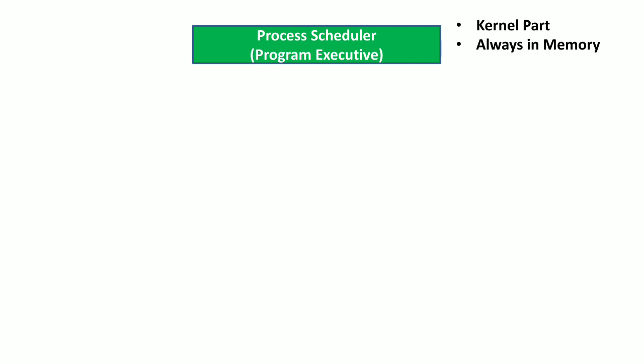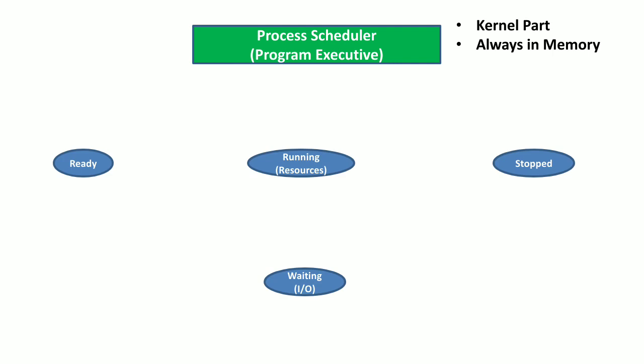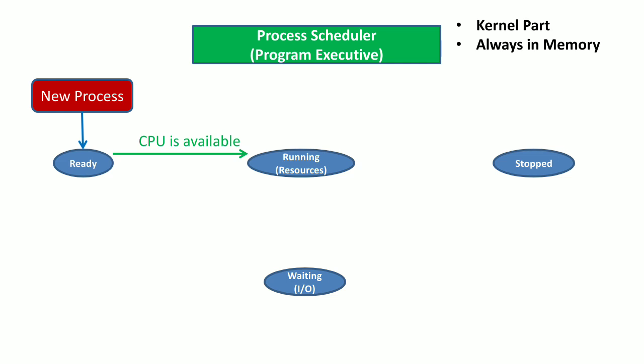In this video I will discuss various different states of a process while it is being executed by the operating system. This is a process scheduler or a program executive, which is basically a special part of a kernel and it always resides inside the computer memory to supervise the execution of other processes. There are four states in which a process may reside: ready, running, stopped, and waiting. Once a new process is created it is in the ready state, and once the CPU is available this new process transitions to the running state.